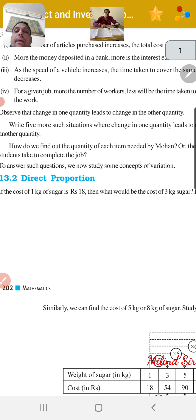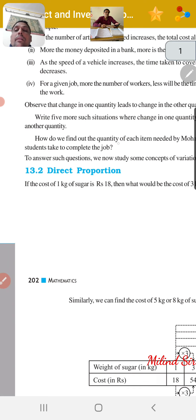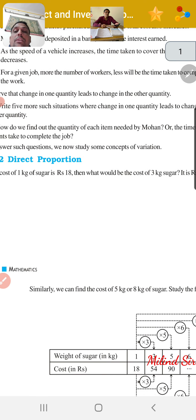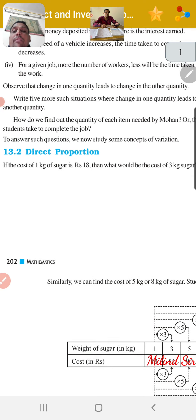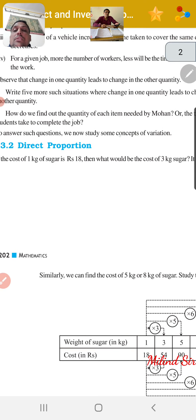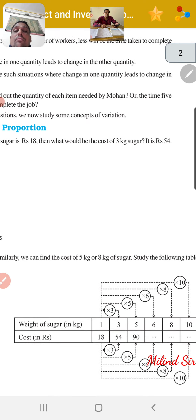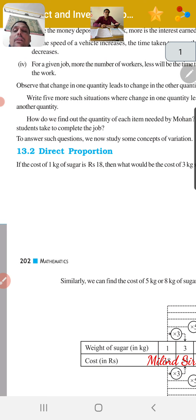If more workers work, then the time taken to complete the job will be less. Observe that change in one quantity leads to change in the other quantity. Write five more such situations where change in one quantity leads to change in another quantity.